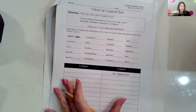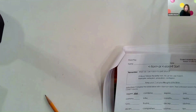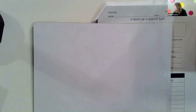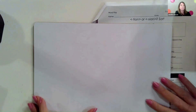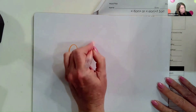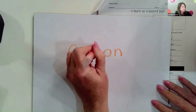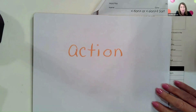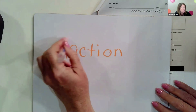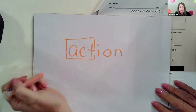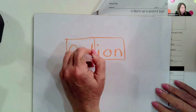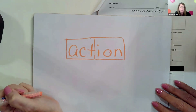So if I had a word like 'action' and I look at it for morphemes, the morphemes are 'act' and the suffix 'i-o-n.' Those are the two units of meaning.